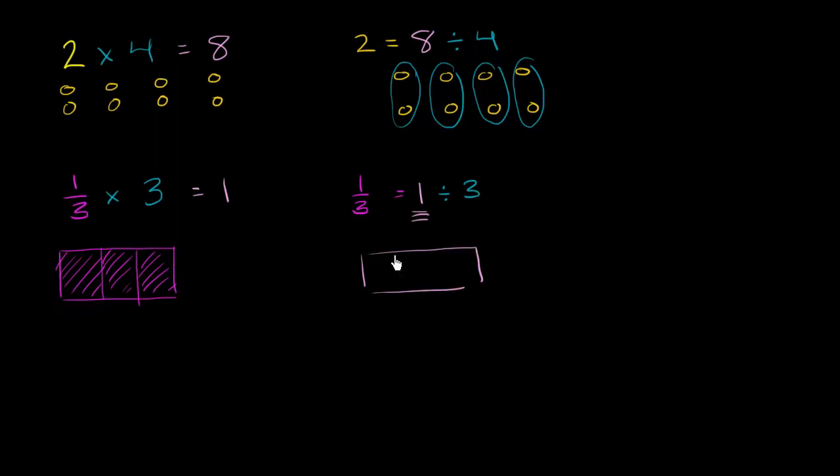the same way that we divided this 8 into 4 equal groups. So if you divide this into 3 equal sections, the size of each of those sections is going to be exactly 1 third.